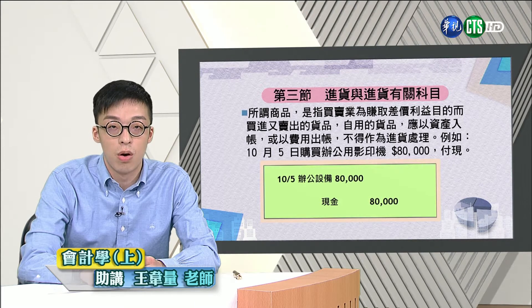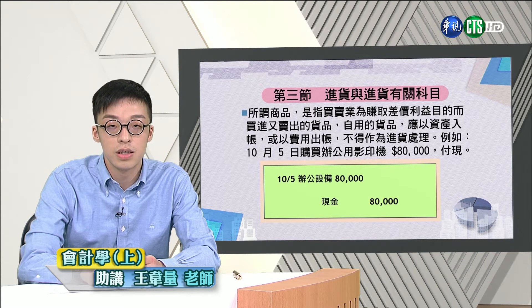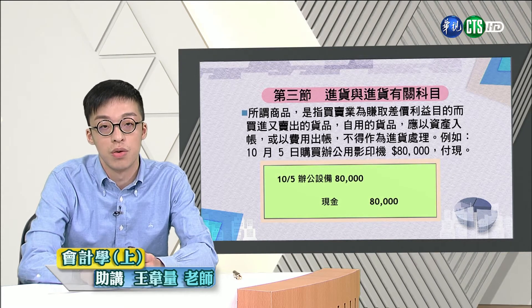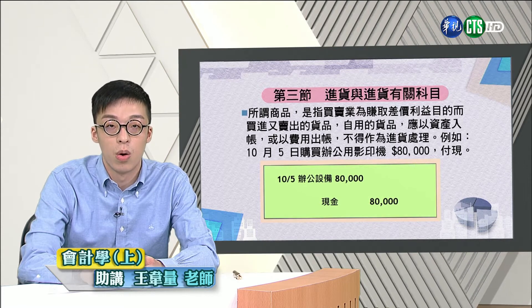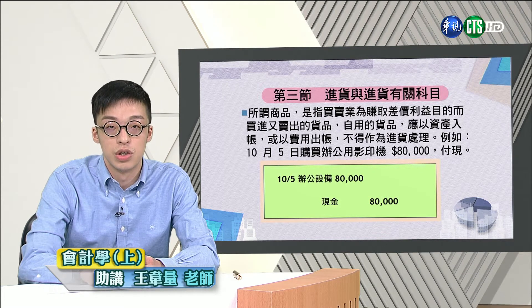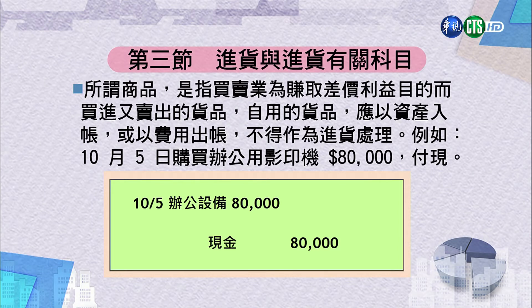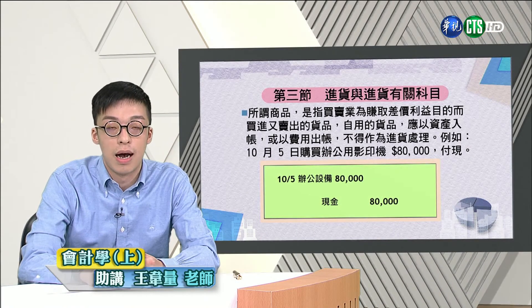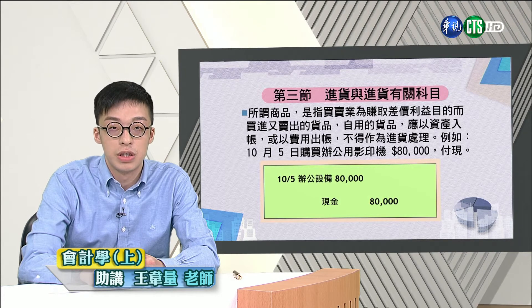買賣業透過買入存貨再賣出商品賺取價差。若企業購買的是固定資產，如機器設備或印表機，這些資產未來是透過使用而非出售獲益，因此不能借記購貨或進貨，而需借記固定資產，日後再透過折舊來攤銷。例如十月五日購買辦公用影印機八萬元，借辦公設備八萬元，貸現金八萬元。